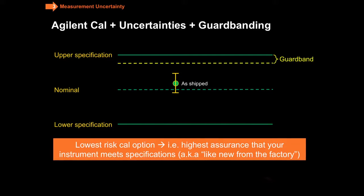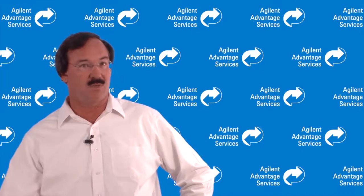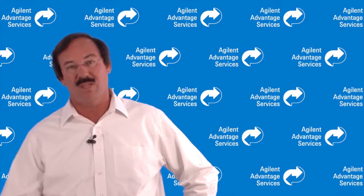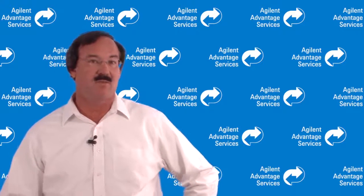So this represents the lowest risk calibration. Risk in terms of the result that's reported may be incorrect. If you need the highest insurance that your instrument meets the specification, for example, like new from the factory, then this is the calibration service that would be best for you. We provide choices because not everyone needs this, but for those who do, this is why we have it. Now you can understand what it is and if it's right for you.